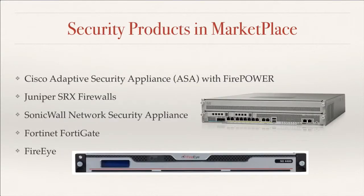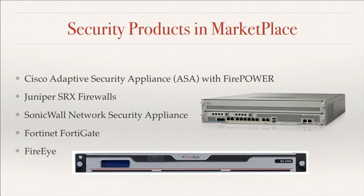There are many security vendors in this marketplace — Cisco, Juniper, and FireEye are just some of them. Most of these devices consist of a specialized computer system packaged in a rack-mountable hardware box, as you can see here. The boxes are placed in the organization's wiring closet, and usually connect between an ISP router and the organization's network. The administrator configures security features through a web interface from inside the corporate network.